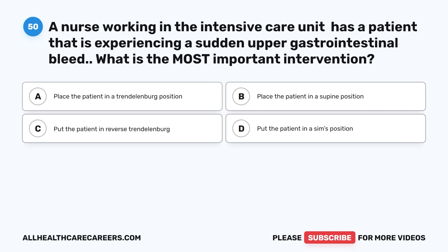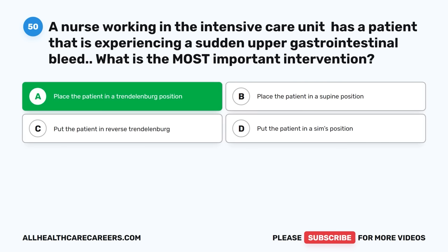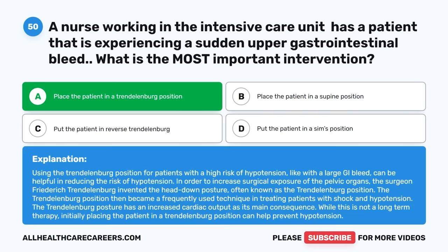Question fifty: A nurse in the ICU has a patient experiencing a sudden upper gastrointestinal bleed. What is the most important intervention? A. Place the patient in a Trendelenburg position. B. Place the patient in a supine position. C. Put the patient in reverse Trendelenburg. D. Put the patient in a SIMS position. The correct answer is A, Trendelenburg position. The Trendelenburg position is helpful in reducing the risk of hypotension for patients with a large GI bleed by increasing cardiac output. While not a long-term therapy, initially placing the patient in Trendelenburg can help prevent hypotension.